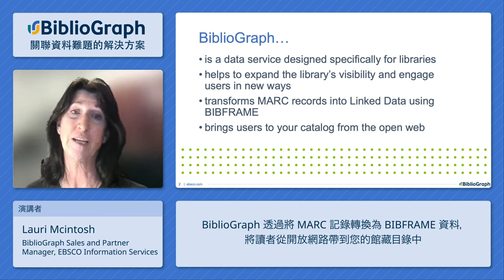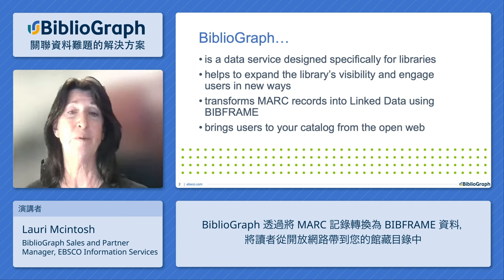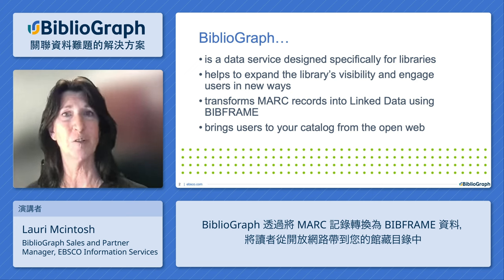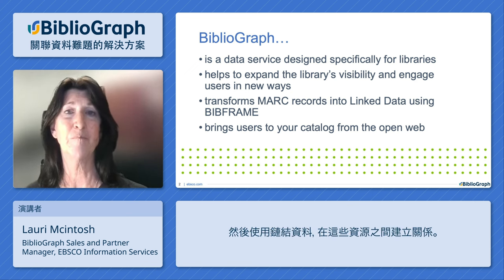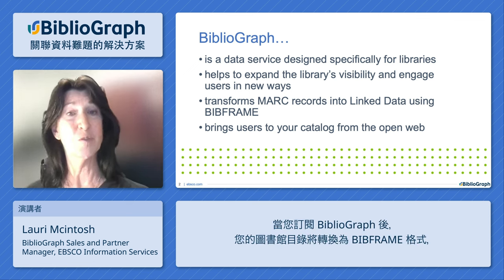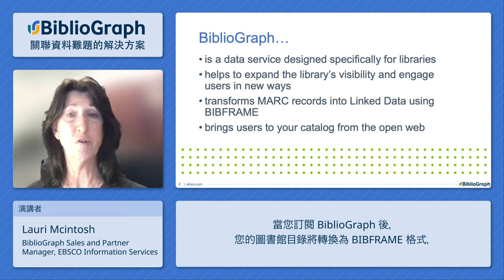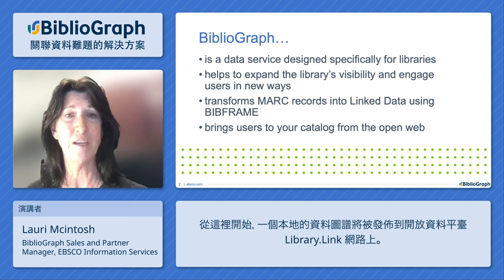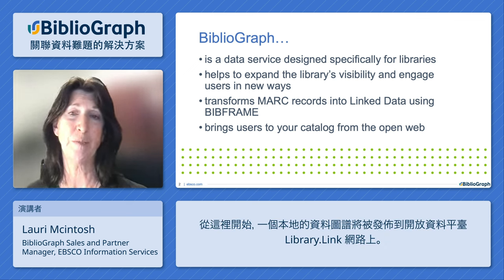It brings users to your catalog from the open web by transforming your MARC records into BibFrame resources and then building relationships between those resources using linked data. When you subscribe to Bibliograph, your library catalog is transformed into the BibFrame vocabulary and from there, a local graph of data is published to the open data platform, the Library Link Network.